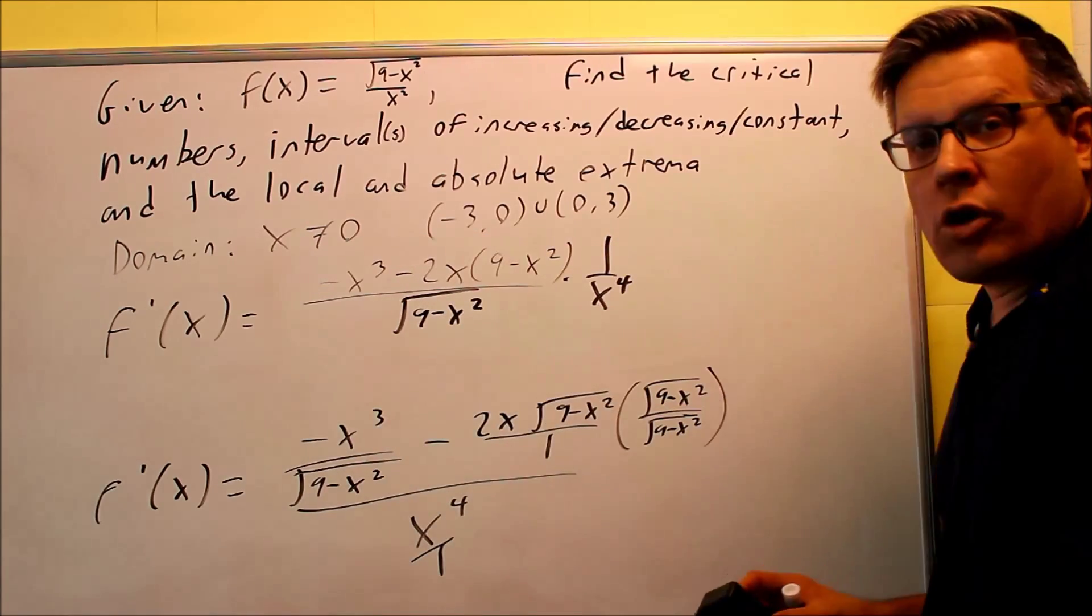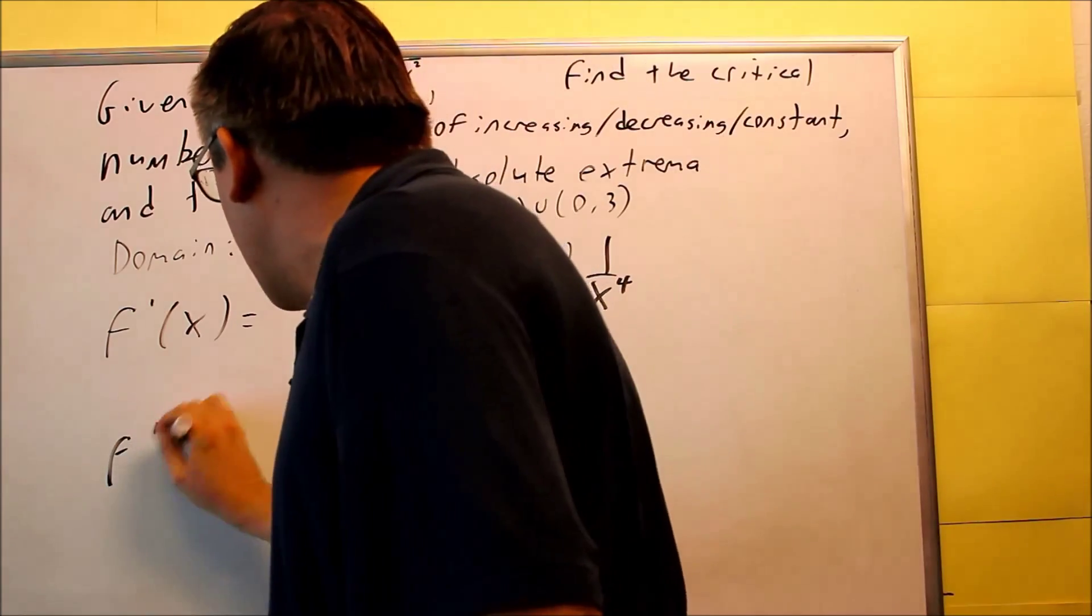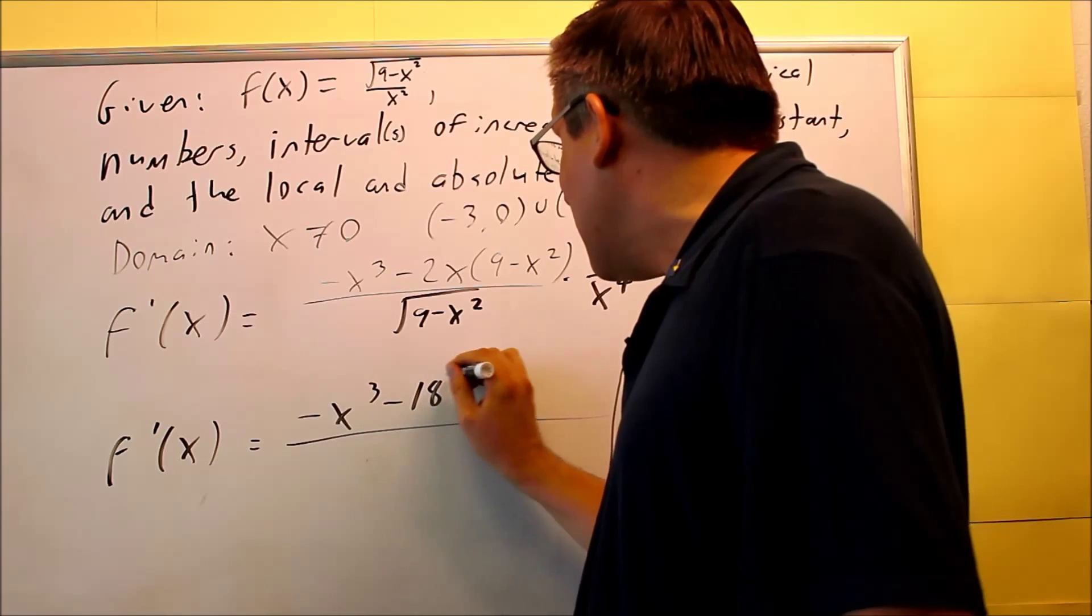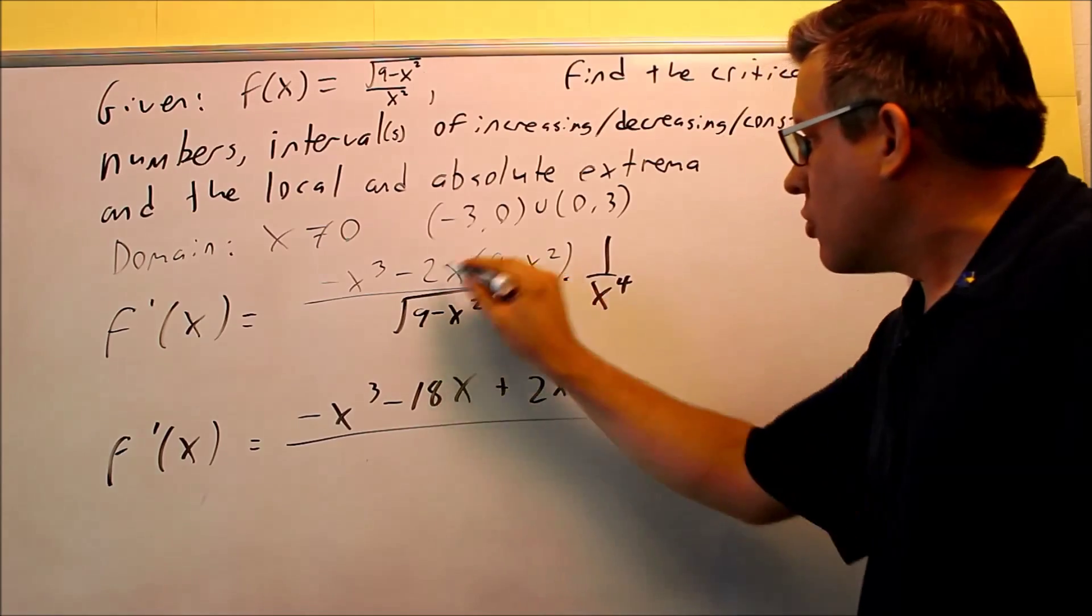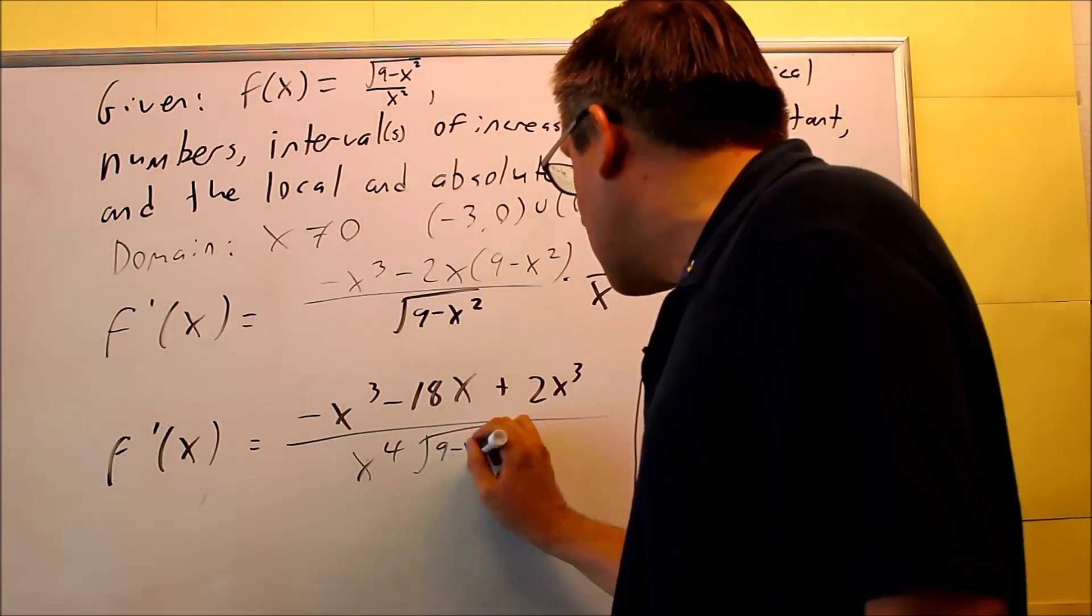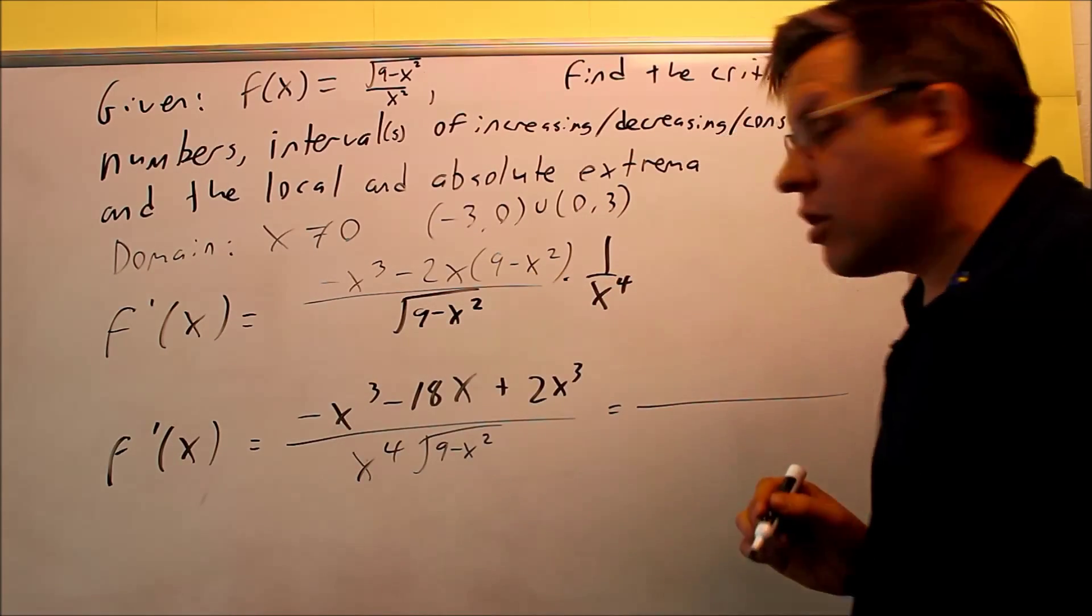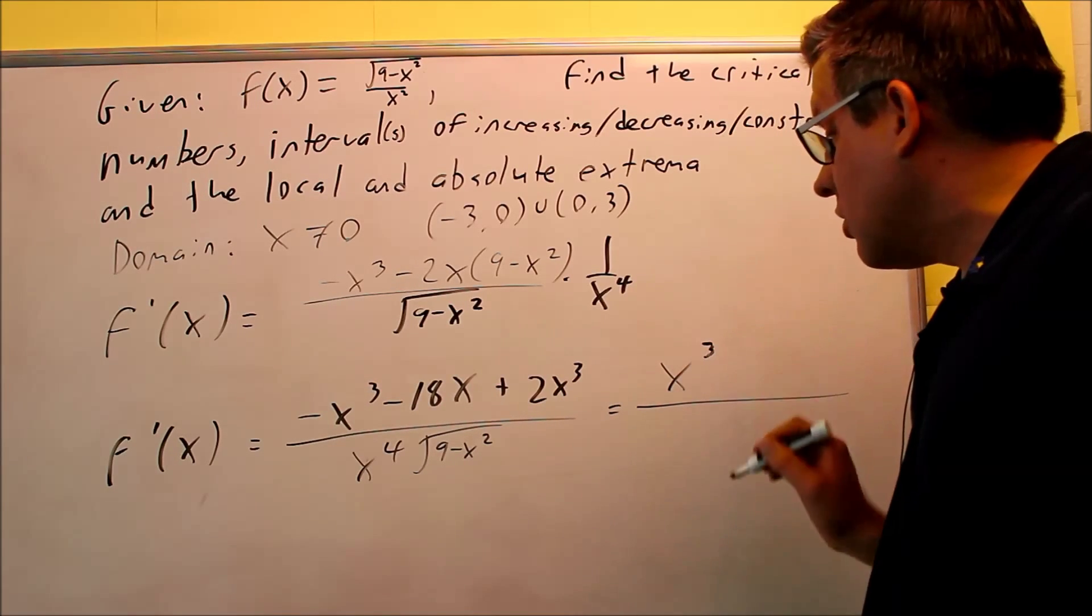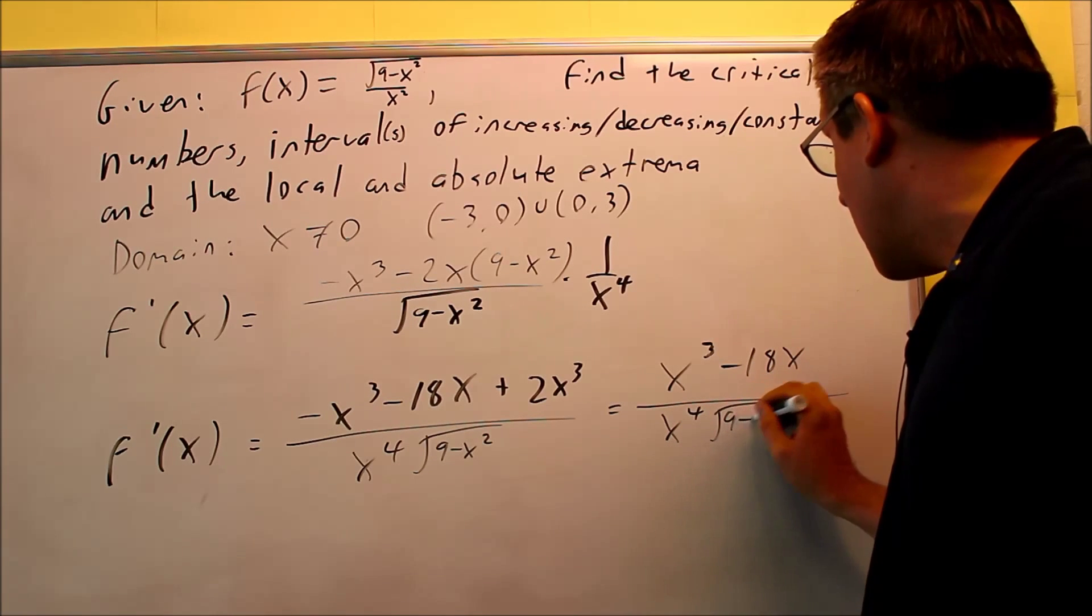We're not done yet. We need to do a little bit more simplifying on top. Negative x cubed, and then you have minus 18x plus 2x cubed. Distribute that through. On the bottom, I have x to the 4th and square root of 9 minus x squared. This part here, we're going to continue. We're going to do 2x cubed minus x cubed. That's positive x cubed minus 18x over x to the 4th, square root of 9 minus x squared.